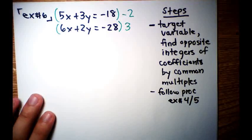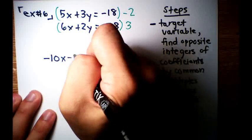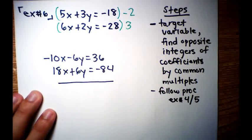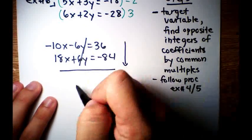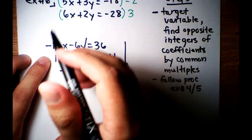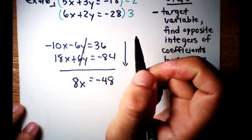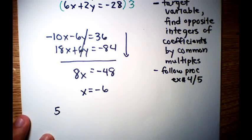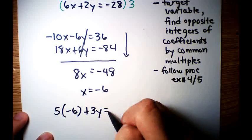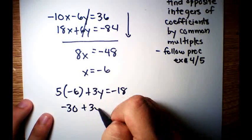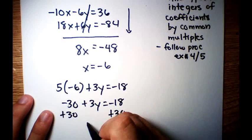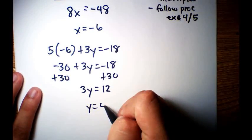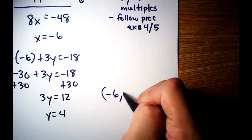Let's do that right now. This is going to be negative 10x minus 6y is equal to 36. And 18x plus 6y is equal to negative 84. Add down. So now we're just left with positive 8x. Careful — 18 is farther away from 0, and negative 84 is farther away from 0, so this is negative. 8x is equal to negative 48. Divide both sides by 8. x is equal to negative 6. Plug that back into the 5x plus 3y equation. 5 times negative 6 plus 3y is equal to negative 18. Negative 30 plus 3y is equal to negative 18. Plus 30 on both sides. 3y is equal to positive 12. y is equal to 4. So these two lines intersect at negative 6, 4.